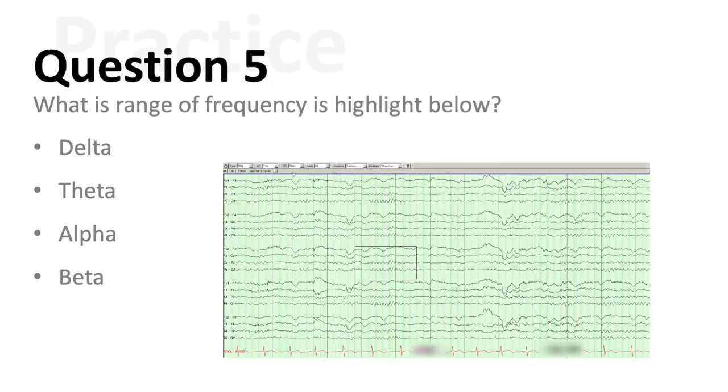Now, I would like you to look at the EEG below that's contained within that box. What is the range of the frequency highlighted below? Is it delta, theta, alpha, or beta? If you answered alpha, you would be correct.